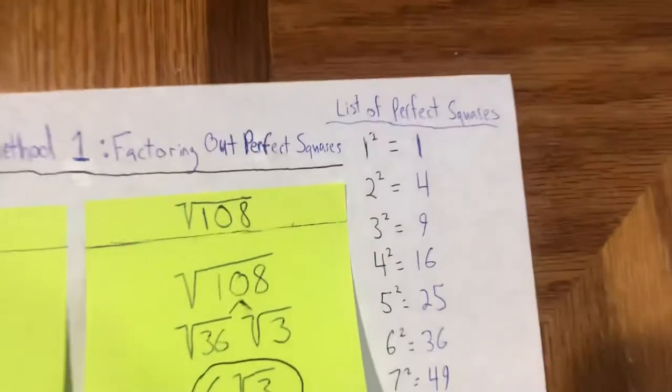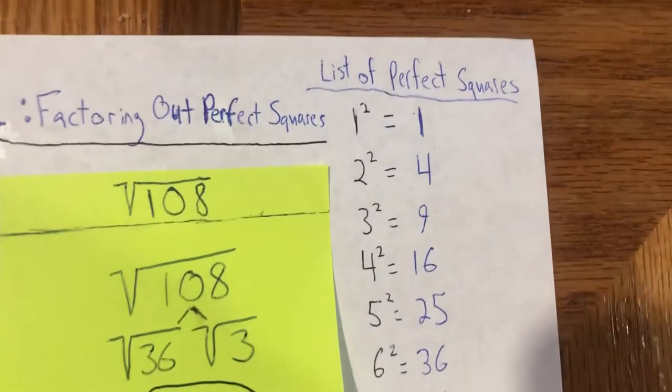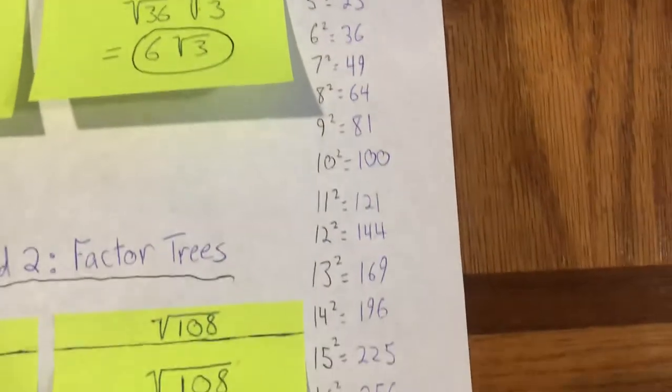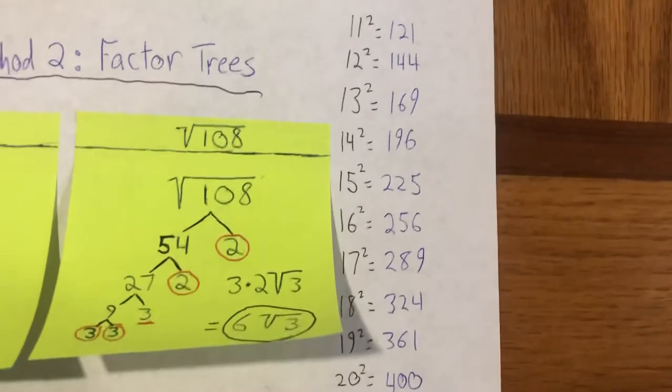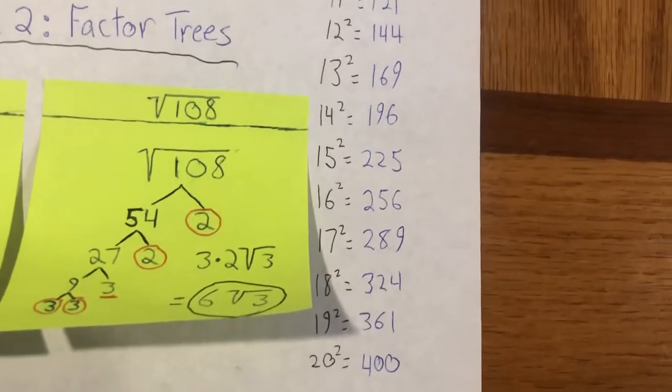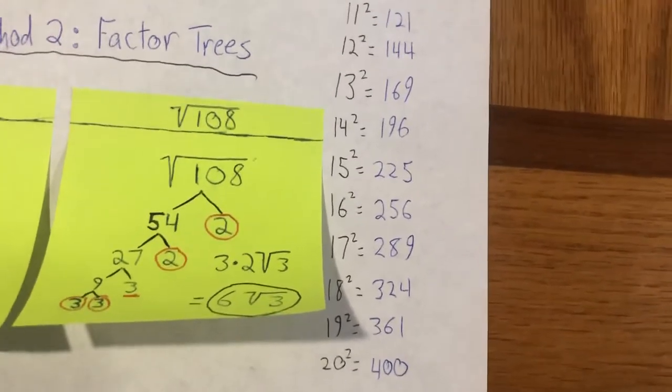The first method I'm going to show you is factoring out perfect squares. Now to use this method, you might want to make a list of perfect squares like I have here. I ended up mapping out 1 squared through 20 squared. This can go as high as you need it to be, but I figured 20 was overdoing it, so I stopped there.